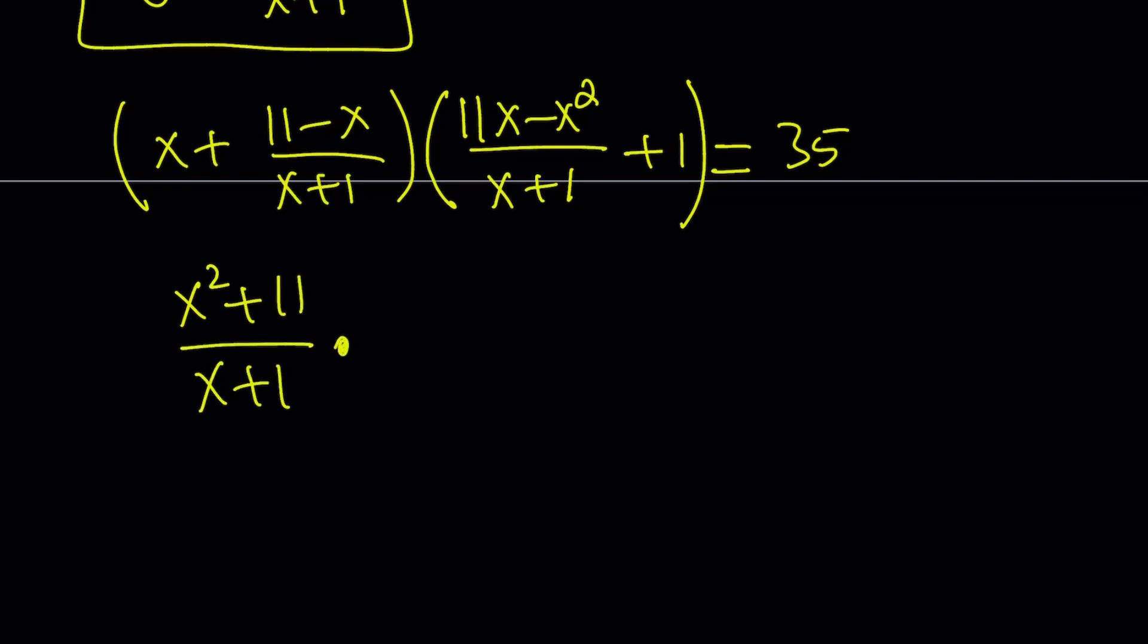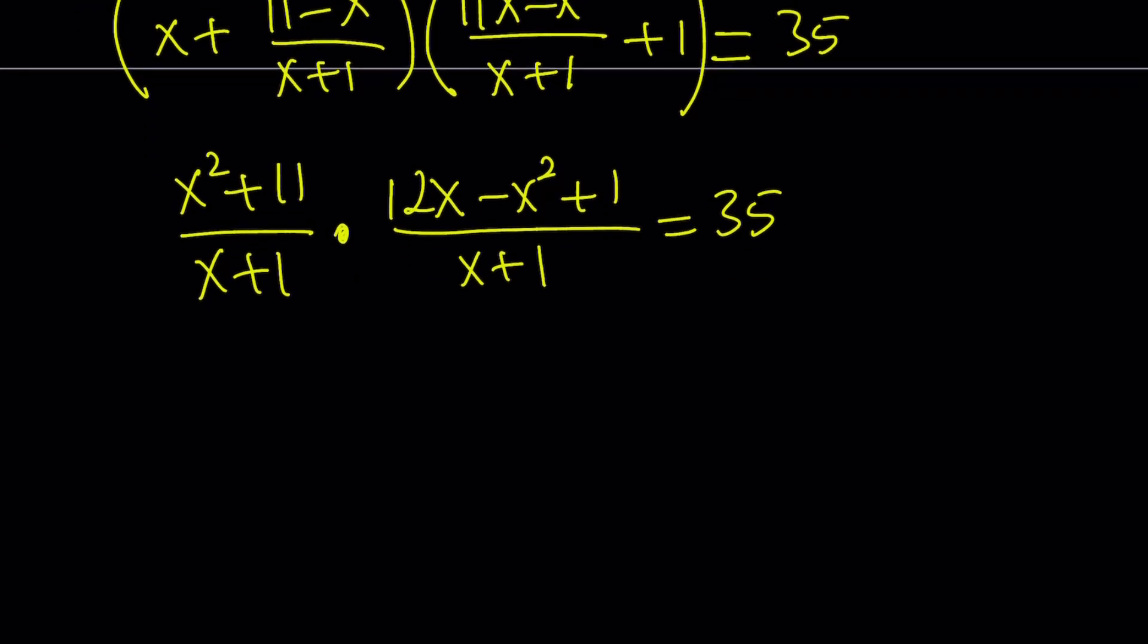And that is multiplied by (11x+x), which is 12x, minus x²+1. And that is divided by (x+1) as well. And this product is equal to 35.